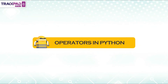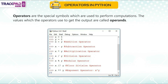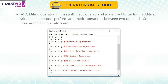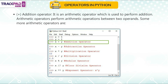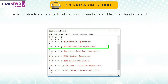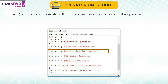Operators in Python: Operators are special symbols used to perform computations. The values operators use are called operands. Arithmetic operators perform operations between two operands. The addition operator (+) performs addition. The subtraction operator (−) subtracts the right-hand operand from the left-hand operand. The multiplication operator (*) multiplies values on either side of the operator.